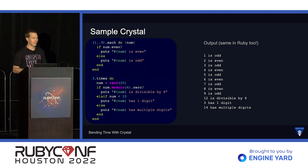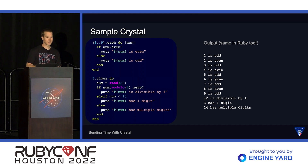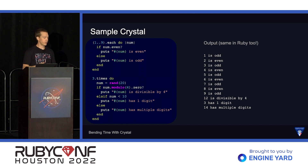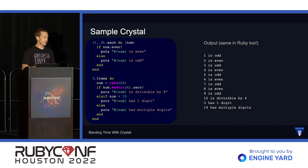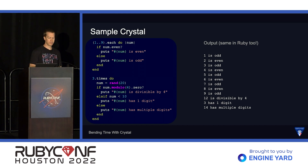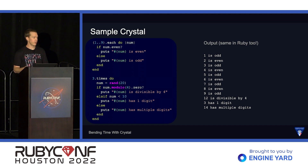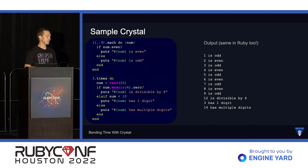But rather than talking about it, let's take a look at some Crystal code. If we look at this, it probably looks very familiar — it looks just like Ruby. It starts off with a range from 1 to 9 that we iterate through. We check to see if the number is even, and if it is, we print that, or we print that it's odd. After that, we run a block three times, take a random number up to 20, divide it by four and see if the remainder is zero, and check to see if it's a single-digit number or not.